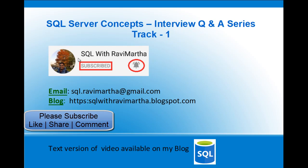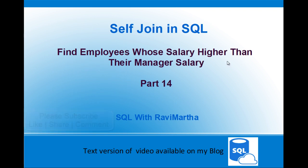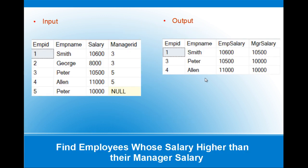Welcome back to SQL with Ravi Martha. Today we'll see how to find employees whose salary is higher than their manager's salary. The input table has employee ID, employee name, salary, and manager ID. We want to find employees whose salary is greater than their manager's salary. The table has only manager ID but not the manager salary directly, so we need to look up from the same table and derive the manager salary. The desired output is wherever the employee salary is higher than their manager's.